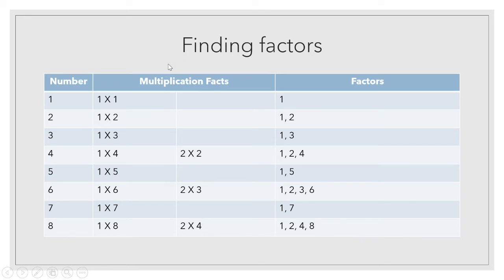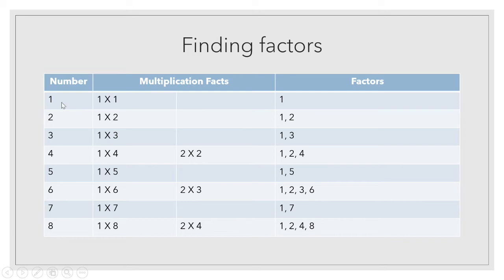After doing the activity, let us find the factors of all numbers starting from one. We will see in which tables the given number comes. For one — one comes in only one table, the table of one itself: one one is one. So one is a unique number because it comes in only one table.